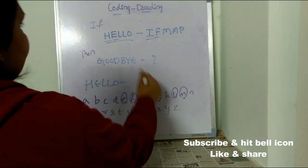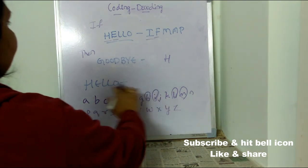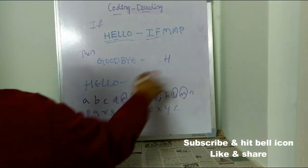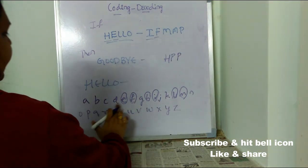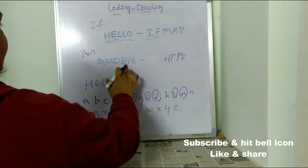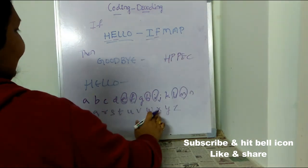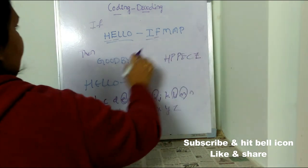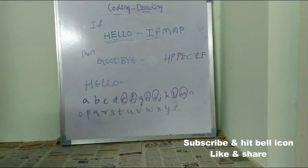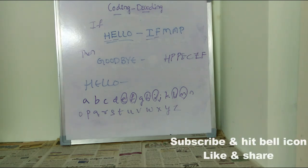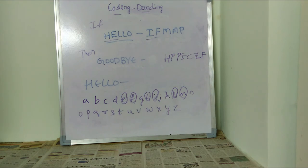Applying the same rule to GOODBYE: G → H, O → P, O → P, D → E, B → C, Y → Z, E → F. So GOODBYE can be written as H-P-P-E-C-Z-F. We take the help of all the alphabets and consider what transformation needs to be applied.